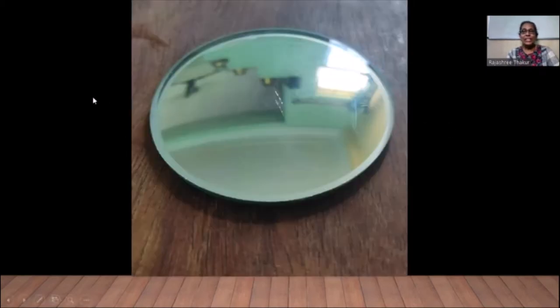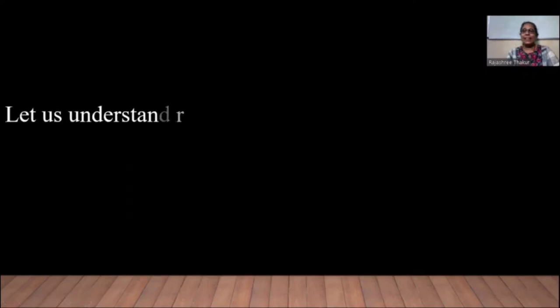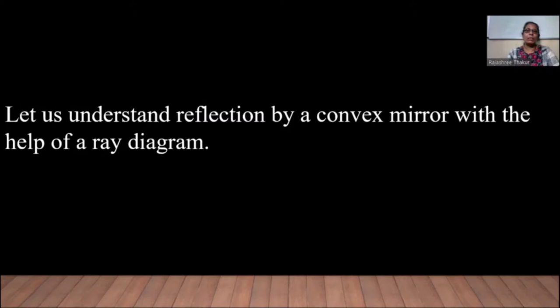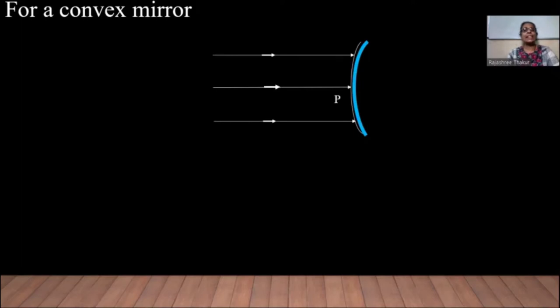First of all, let us see how a convex mirror looks. You can see here it is curved outwards. Now, let us understand the reflection by a convex mirror with the help of a ray diagram. For a convex mirror, let us consider some rays parallel to the principal axis. These rays are incident on the convex mirror.